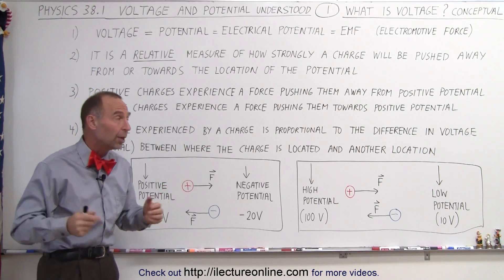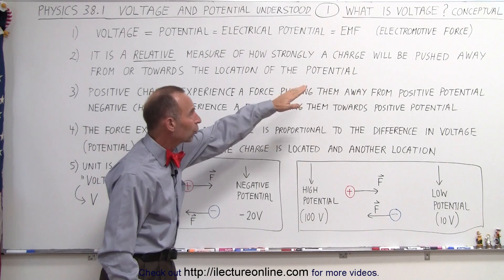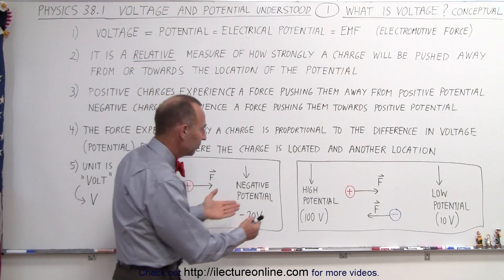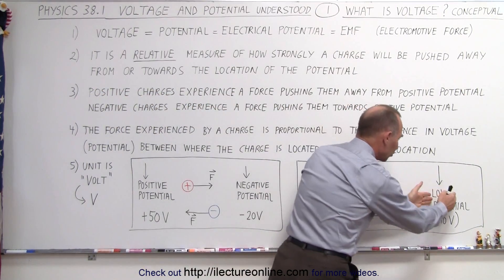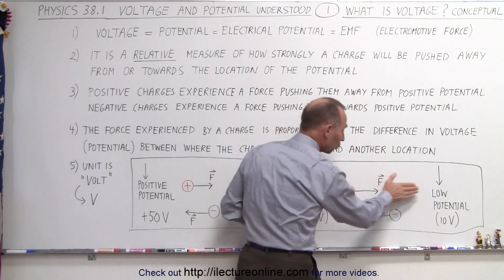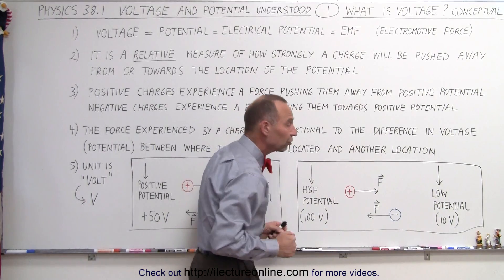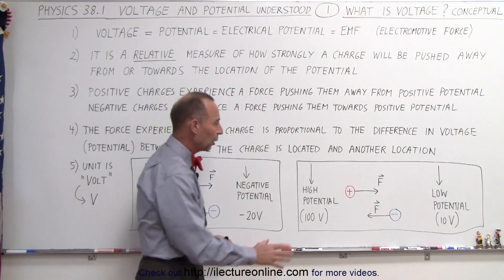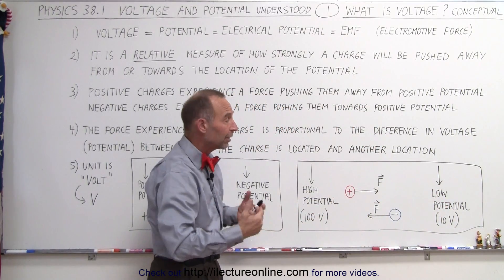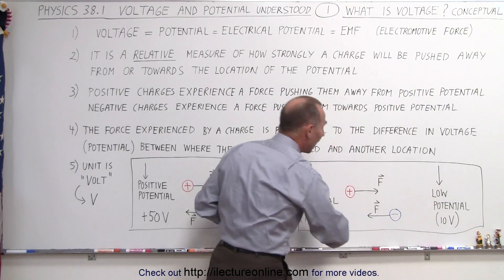That's why sometimes you hear the concept 'potential difference.' It's a relative measure of how strongly a charge will be pushed away or towards the location of the potential. Here we have a diagram. Let's say there's a high potential here and a low potential here. A positive charge will be pushed from the high potential towards the low potential, and a negative charge will be pushed from the low potential to the high potential. Charges will move so that positive charges go from high to low, and negative charges move from low to high potential.